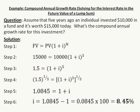Step 2: plug in the information that is known. So $15,000 equals $10,000 times 1 plus I raised to the 5th power. Divide through by $10,000 on each side. So in Step 3, you have 1.5 equals 1 plus I raised to the 5th power.